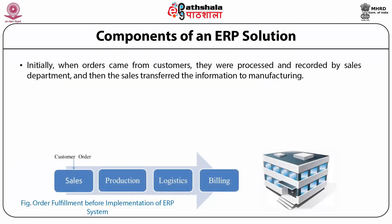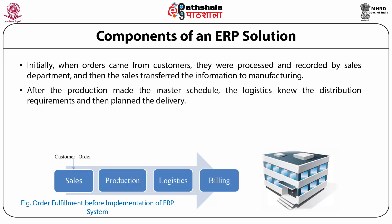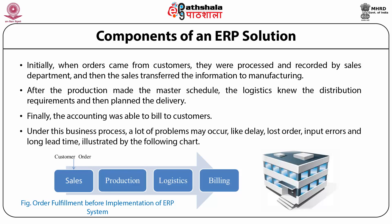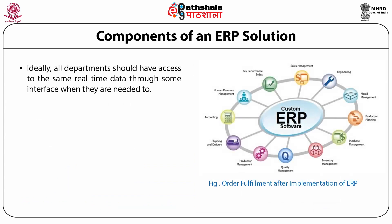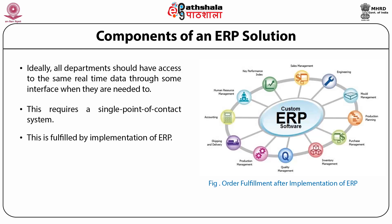Initially, when orders come from the customer, they were processed and recorded by the sales department, which then transferred information to manufacturing. After production made the master schedule, logistics knew the distribution requirement and planned the delivery. Finally, accounting was able to bill customers. Under this business process, many problems may occur, like delay, lost orders, input errors, and long lead times. Ideally, all departments should have access to the same real-time data through some interface when needed. This requires a single point of contact system, which is fulfilled by implementation of ERP.